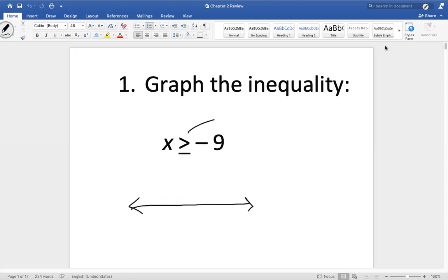This symbol means closed circle. I'm going to put negative nine in the middle. It's a closed circle at negative nine. And we're eating the X, so we're going to shade to the right. So there we go. Easy enough.